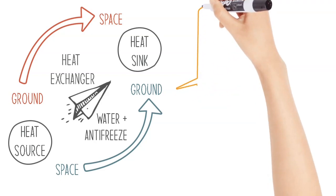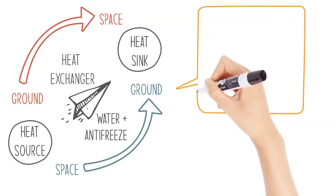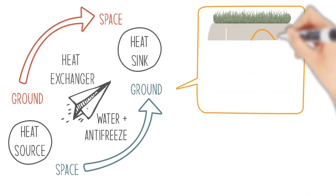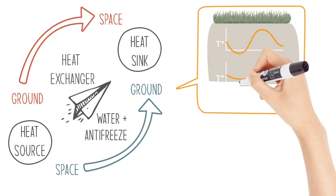One of the advantages of using the ground is that its temperature is fairly stable throughout the year. The closer to the surface, the more it will fluctuate. The deeper you go, the more stable the temperatures.